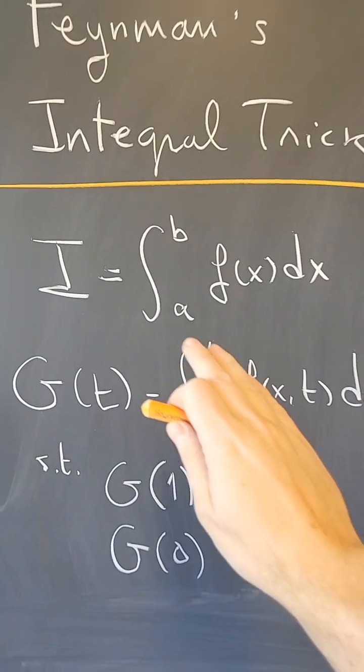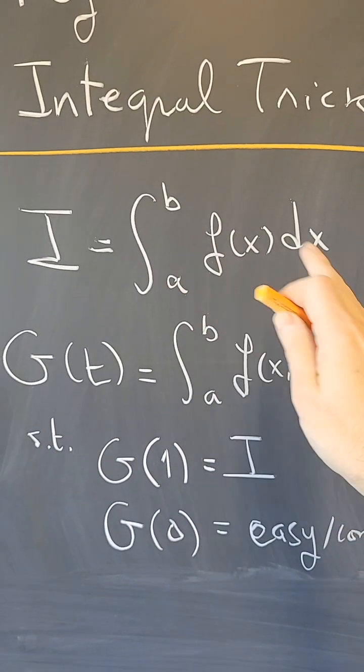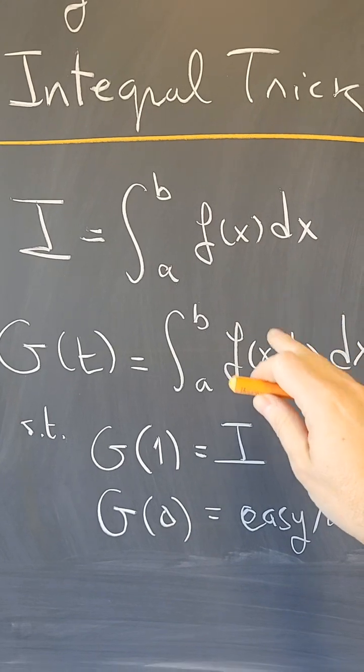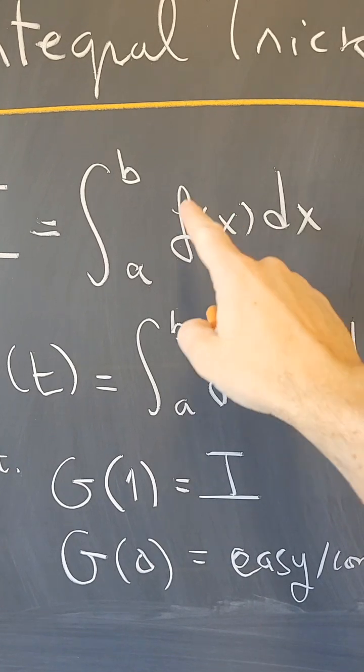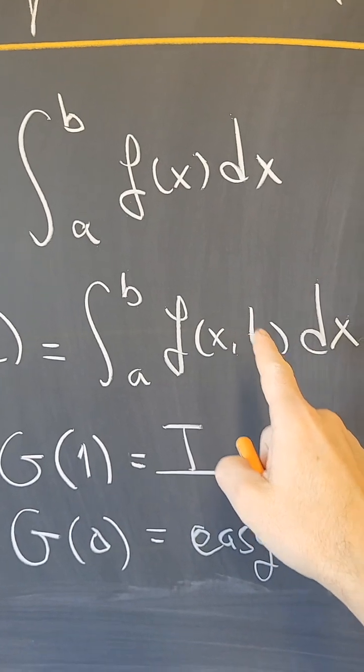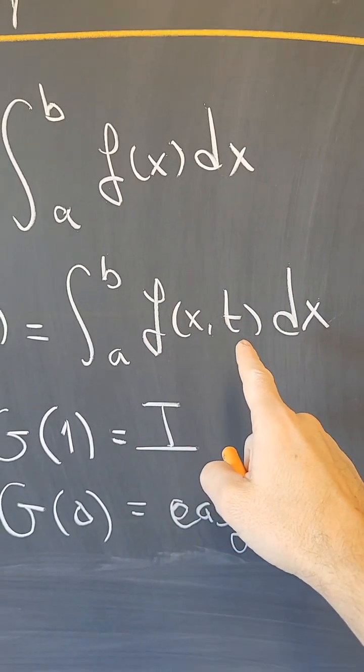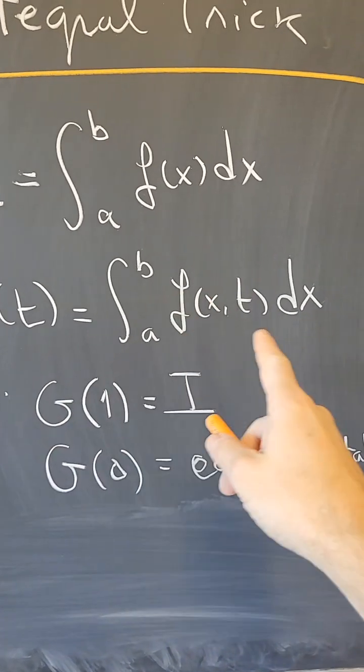Here's how it works. Suppose there is some integral i that I want to compute, some definite integral, although the method can be extended to indefinite integrals. But let's do it here for a definite integral. What I'm going to do is introduce a parameter t. So I'm going to modify f of x so that now it's a function of x and a parameter t, and consider the function g of t of that parameter t.